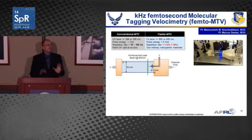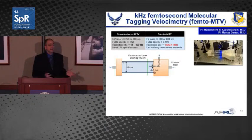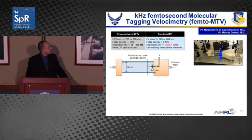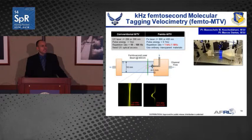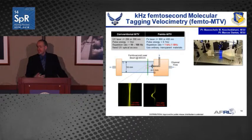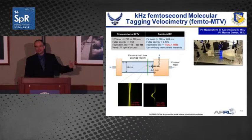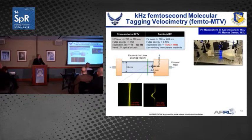Now I switch gears to work being done at Michigan State University — characterizing flow, but this is a non-reacting flow with no combustion. This is a project where the PIs are looking to do femtosecond molecular tagging velocimetry, or femto-MTV. In traditional MTV, you shine your laser into a flow of interest, excite some molecules and tag them. Then in a pump-probe geometry, you wait some time — in this case two milliseconds — take another picture, and see that the flow has moved. The second position tells you something about the velocity of that flow element.